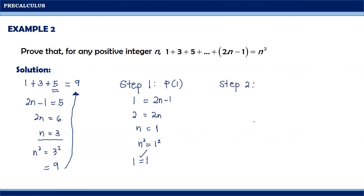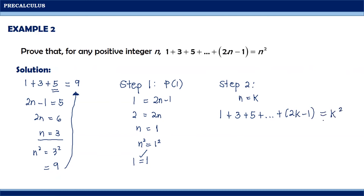For step 2, we need to assume that the mathematical statement is also true for n is equal to k, meaning we will be changing all the variables n into k. So we will have 1 plus 3 plus 5 plus and so on and so forth plus 2k minus 1 is actually equal to k squared.